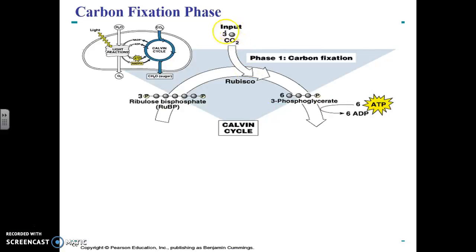In the carbon fixation phase of the Calvin cycle, three carbon dioxides are brought into the cycle and they are bonded to a molecule known as RU-BP. RU-BP is a five-carbon molecule. What happens is that three carbon dioxides are added to RU-BP, and this is done by the enzyme Rubisco. Rubisco is one of the most important enzymes on the earth — it's responsible for making glucose and starting the Calvin cycle.